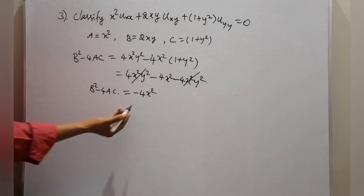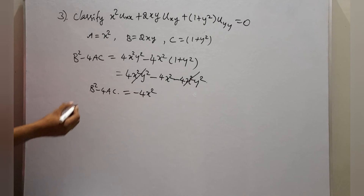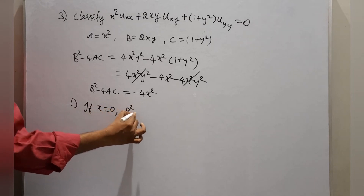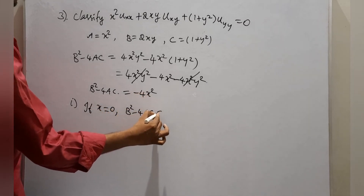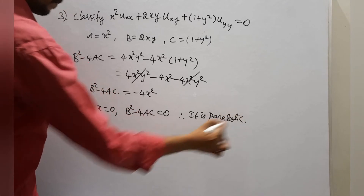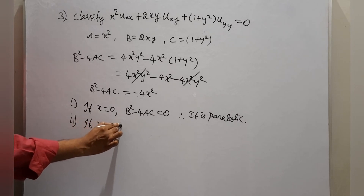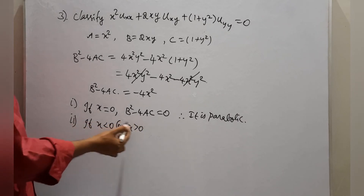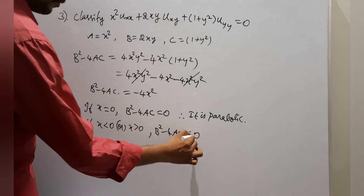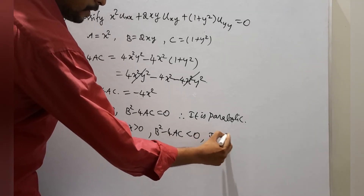Since we do not know the values of x and y, we consider cases. Case 1: If x = 0, then B² minus 4AC becomes 0, hence the equation is parabolic. Case 2: If x < 0 or x > 0, in both cases x² is positive, so B² minus 4AC equals -4x² is negative, hence the equation is elliptic.